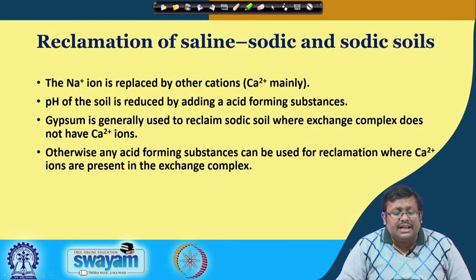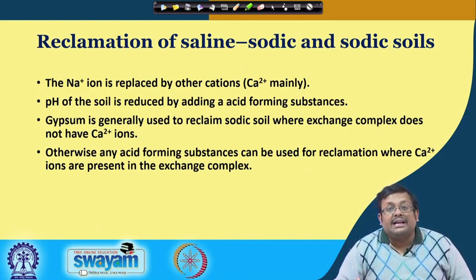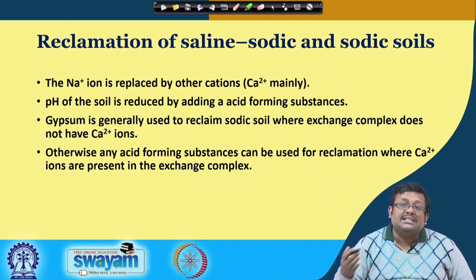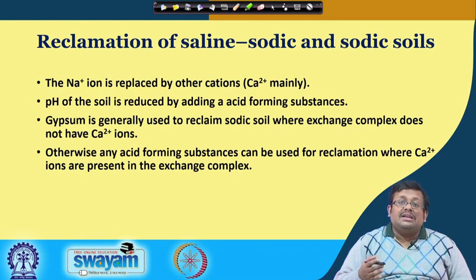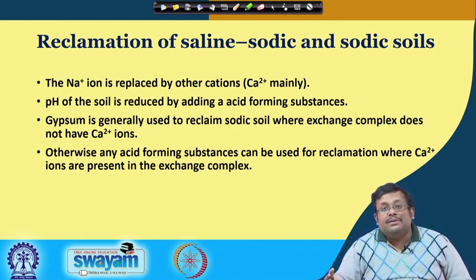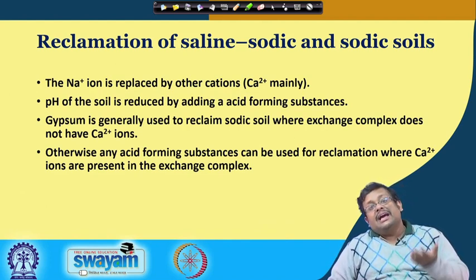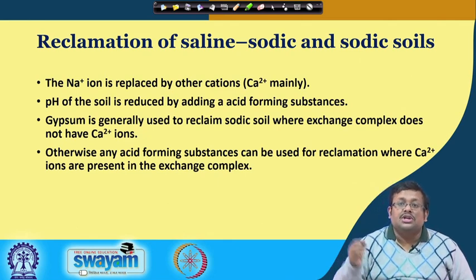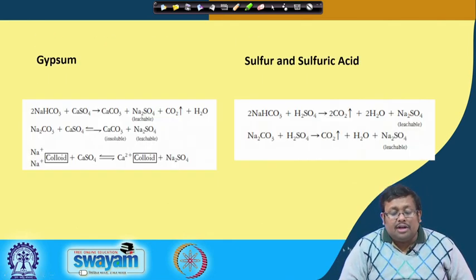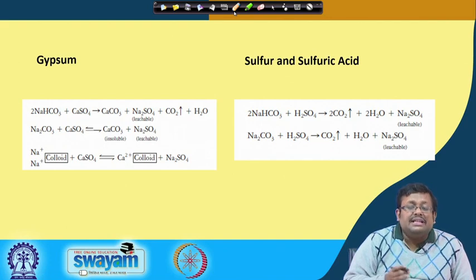For reclamation of saline-sodic and sodic soils, the sodium ion is replaced by cations like calcium, and pH of the soil is reduced by adding acid-forming substances — generally gypsum. Gypsum is used to reclaim sodic soil where the exchange complex does not have calcium ions. Otherwise, any acid-forming substance can be used where calcium ions are already present in the exchange complex.